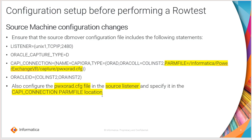There are a few configuration setup items that need to be taken care of before performing the row test. In the source machine DB mover, you should specify the necessary parameters like listener, Oracle capture type, and CAPI connection statements, where you should have the PWX ORA file location pointing to the source machine, along with the Oracle ID and so on.